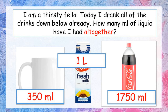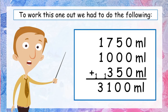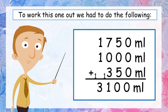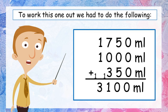Here's the sum: 1,750 from the coke, 1,000 from the milk, and 350 mils from the coffee cup. When we add them all together, remembering to carry our 1s, we get 3,100 millilitres. That is your answer. Give yourself a tick if you got it and let's go on to the last question of the day — I've saved the hardest till the end.